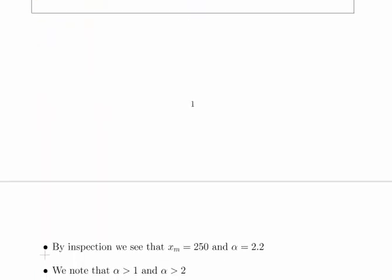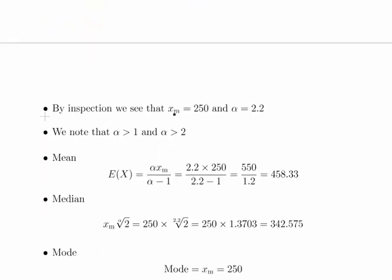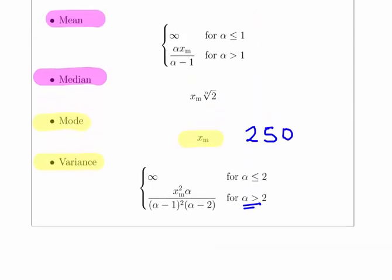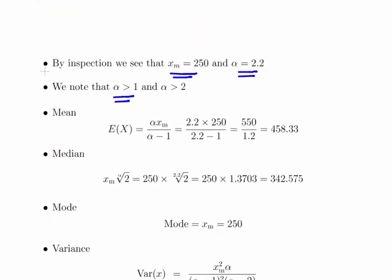We'll just stick with the mean. By inspection, we know that Xm is 250 and alpha is 2.2. We note that for these conditions, alpha greater than 1 and alpha greater than 2, we do fulfill these conditions.